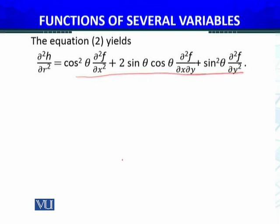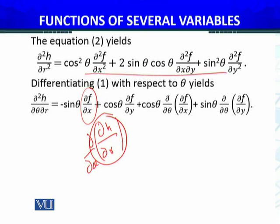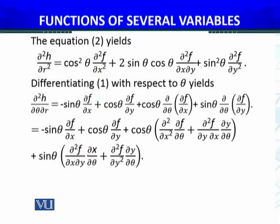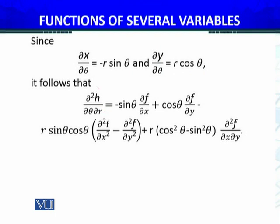Differentiating equation (1) with respect to θ in the same way, I will differentiate ∂h/∂r with respect to θ. Then you apply the chain rule similarly, simplify as I did before. After applying the chain rule and plugging in the expressions for x and y in terms of r and θ, we have this mixed partial derivative for the composite function. Since ∂x/∂θ equals this one and ∂y/∂θ equals this one, it follows that ∂²h/∂θ∂r equals this complete expression, which is the higher order mixed derivative.